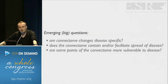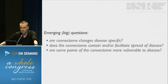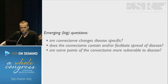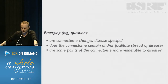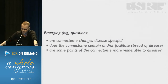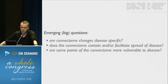For the rest of my time, I'd like to discuss three big questions emerging from all these studies on connectomics in pathology. The first question is: are those disease effects disease-specific? That's important if we want to use these techniques as potential biomarkers. The second question is: does the connectome in some way contain or facilitate the spread of disease effects? And the third point — already touched upon by Ed — is whether some points of the connectome are perhaps more vulnerable to disease effects, rendering critical points as vulnerability hotspots that need to be protected to maintain healthy brain function.